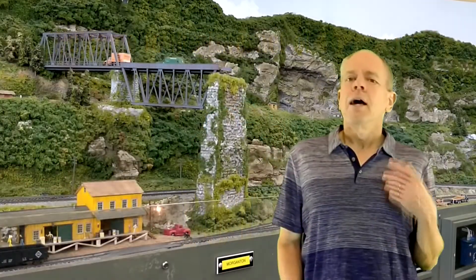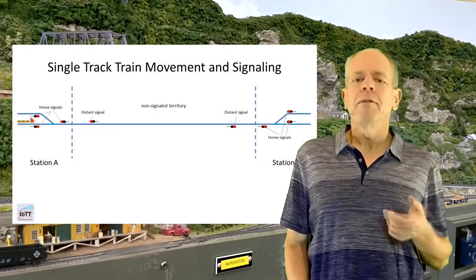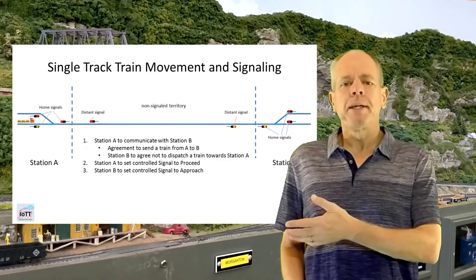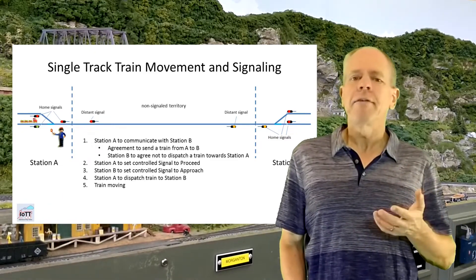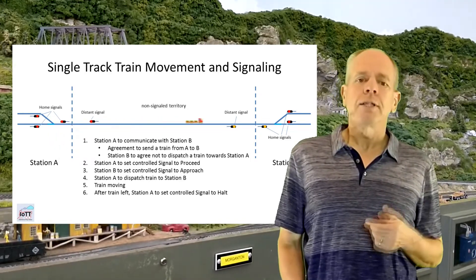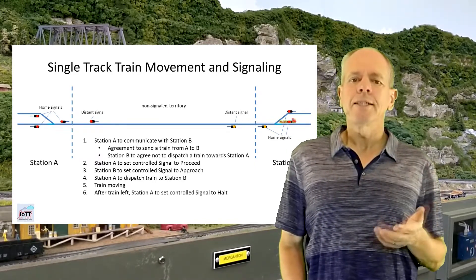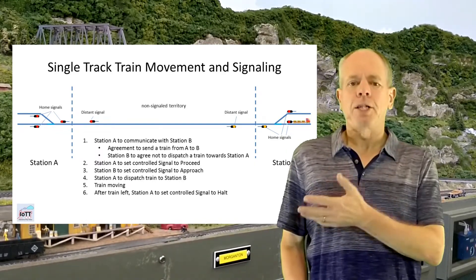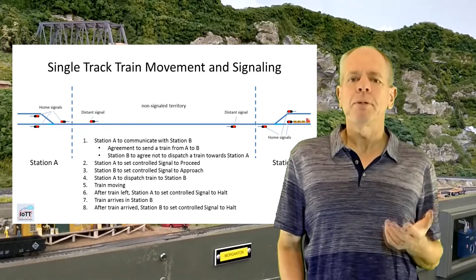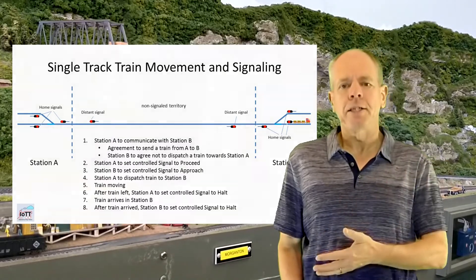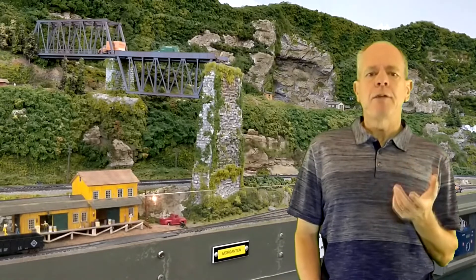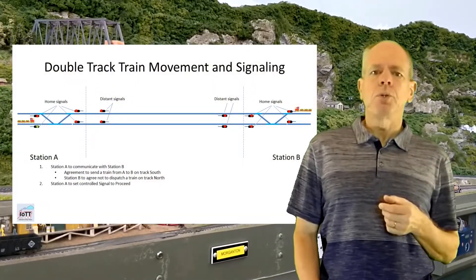I ended video number 20 with an animated example of a train move from station A to station B as it was common on routes with not so heavy traffic about 50 or 60 years ago. The move was announced and agreed between the two stations, the home signals set and the train dispatched. After arrival, the signals were set back — a simple move following the principles of authorization and execution. With increasing demand for transportation, this system soon came to its limits.